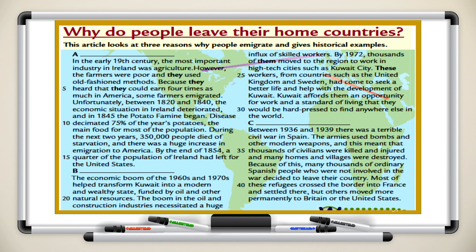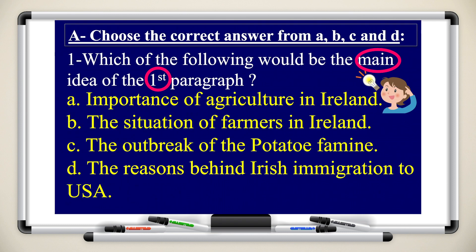Between 1936 and 1939, there was a terrible civil war in Spain. The armies used bombs and other modern weapons, and this meant that thousands of civilians were killed and injured and many homes and villages were destroyed. Because of this, many thousands of ordinary Spanish people who were not involved in the war decided to leave their country. Most of these refugees crossed the border into France and settled there, but others moved more permanently to Britain or the United States.